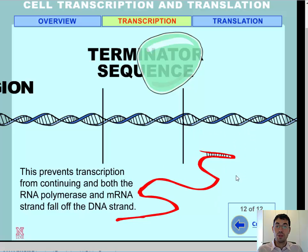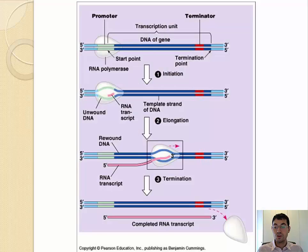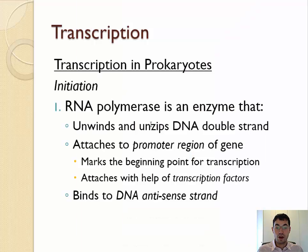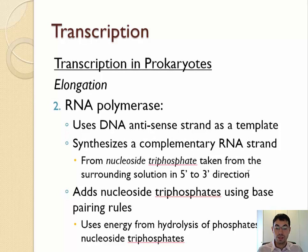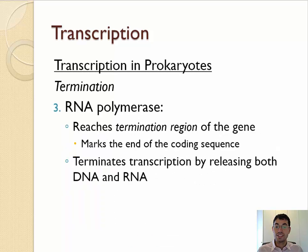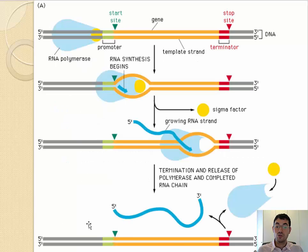This RNA is now going to be edited by cutting out all of the introns. So to summarize: initiation — RNA polymerase unwinds and unzips the DNA, attaching to the promoter region and reading the antisense strand. Elongation — using the antisense strand as a template to make an mRNA strand, building the mRNA in the 5' to 3' direction using base pairing rules. Until termination — when the RNA polymerase reaches the terminator and releases the mRNA and pops off the DNA, allowing the DNA to rewind shut. Initiation, elongation, and termination.